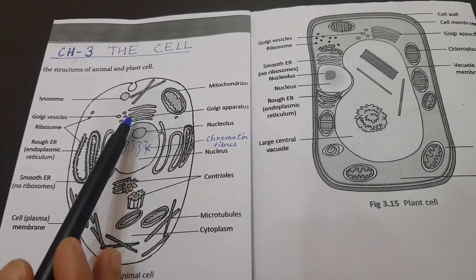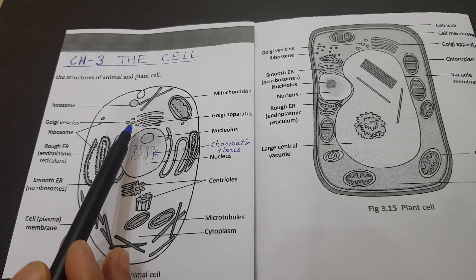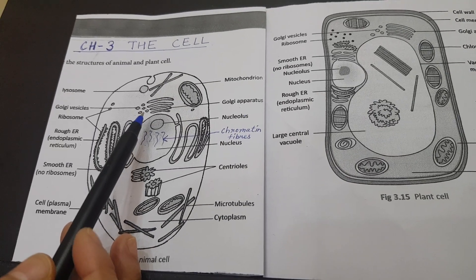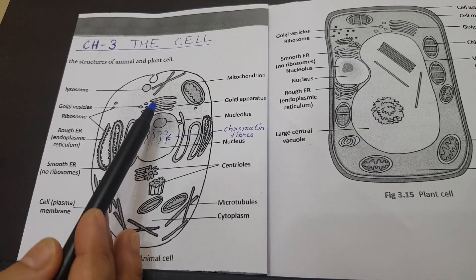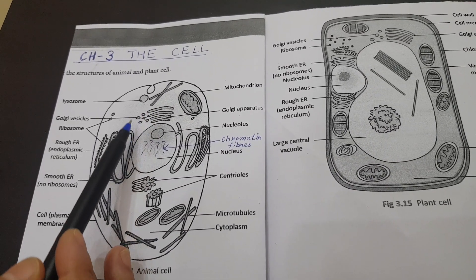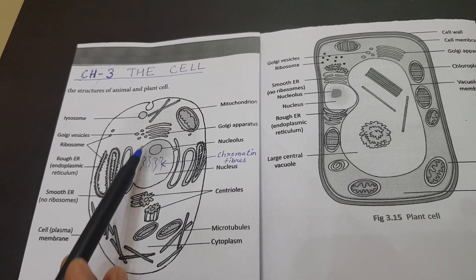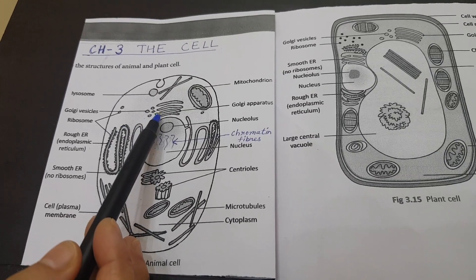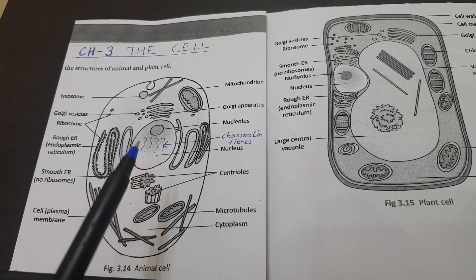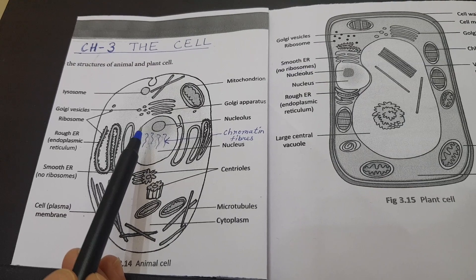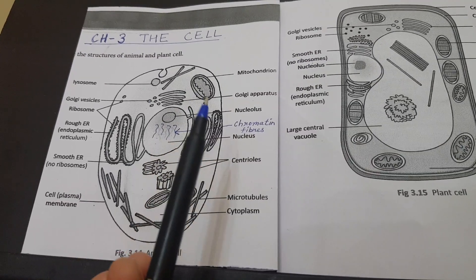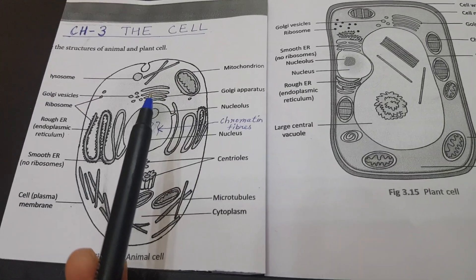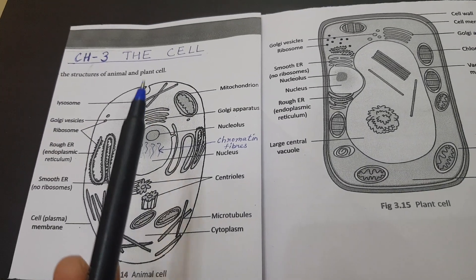Golgi bodies are membrane-bound stacks of thin, flattened, parallel pouches called cisternae. These cisternae are not connected with each other. They are found in the cytoplasm near the nucleus, next to the endoplasmic reticulum. These Golgi bodies are small and more in number. In case of plant cells, they are also called dictyosomes.